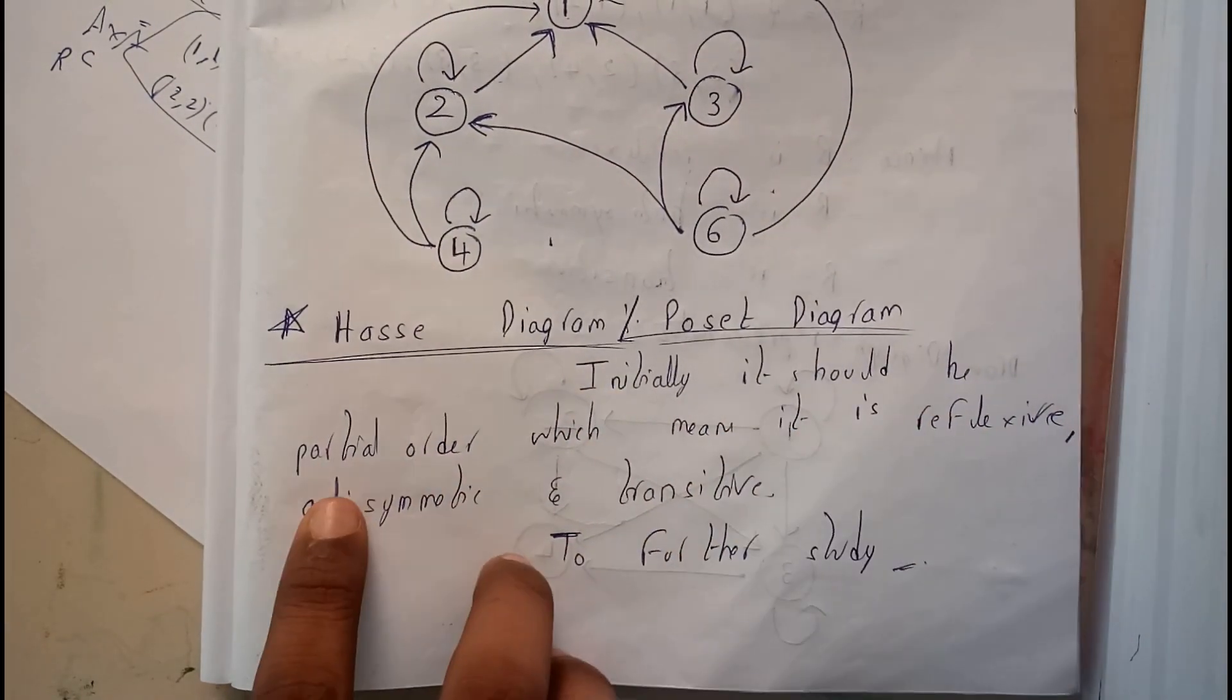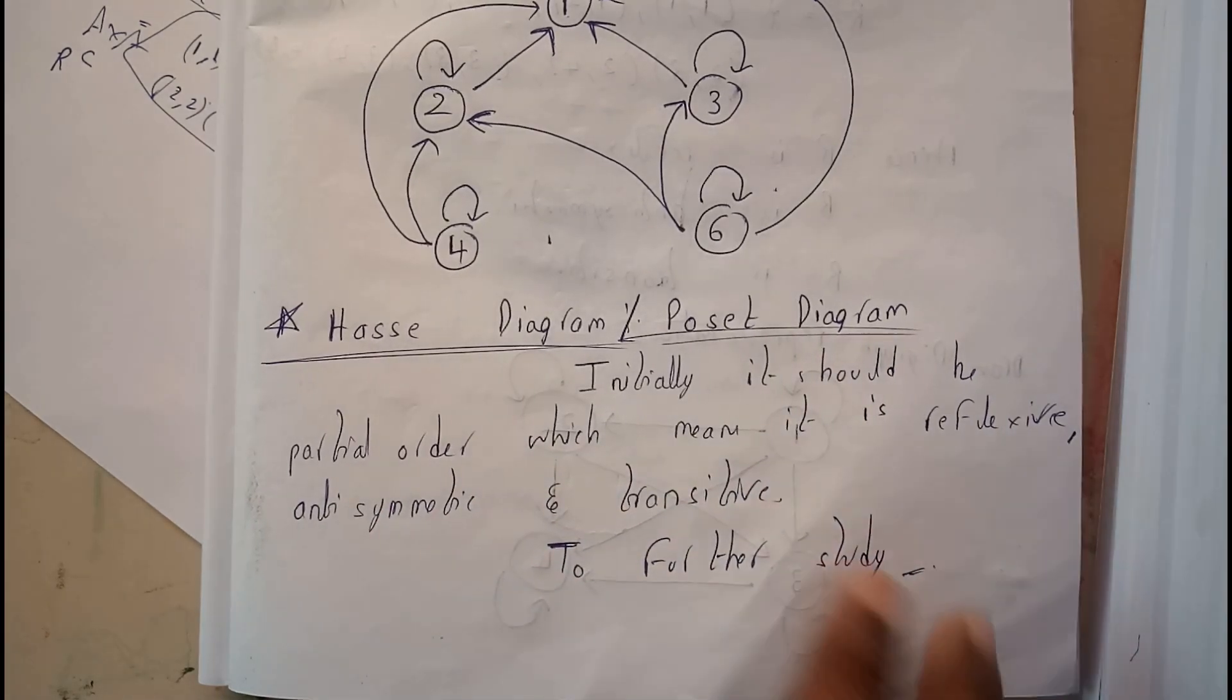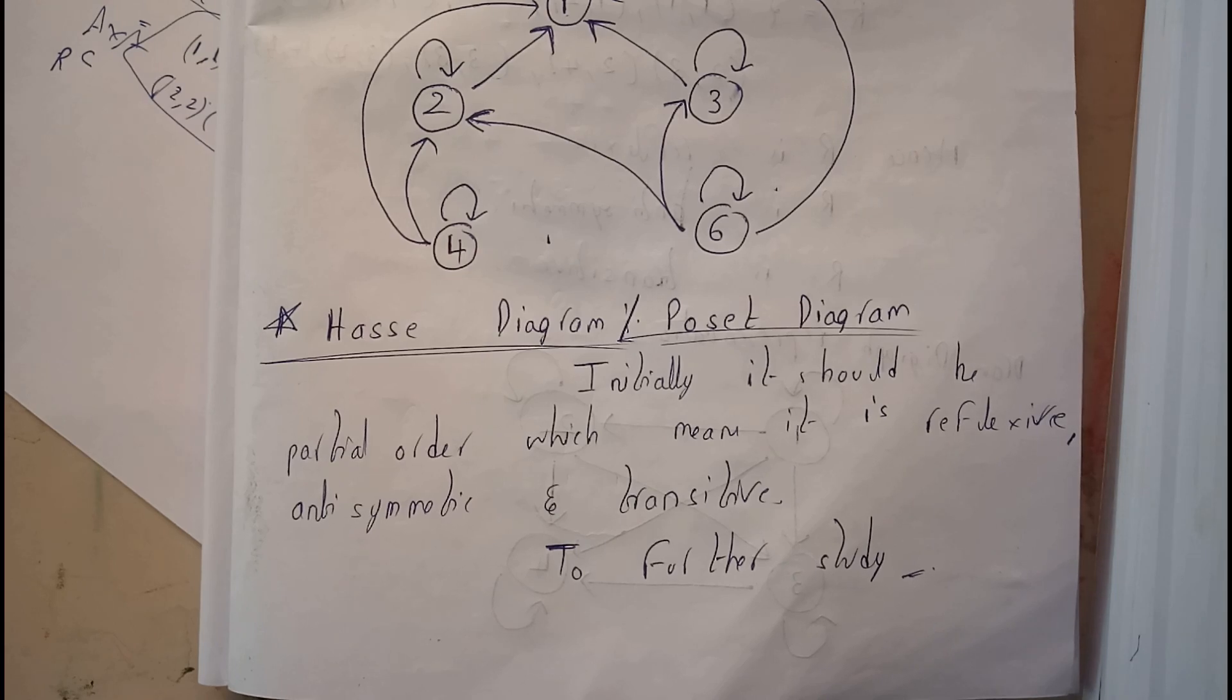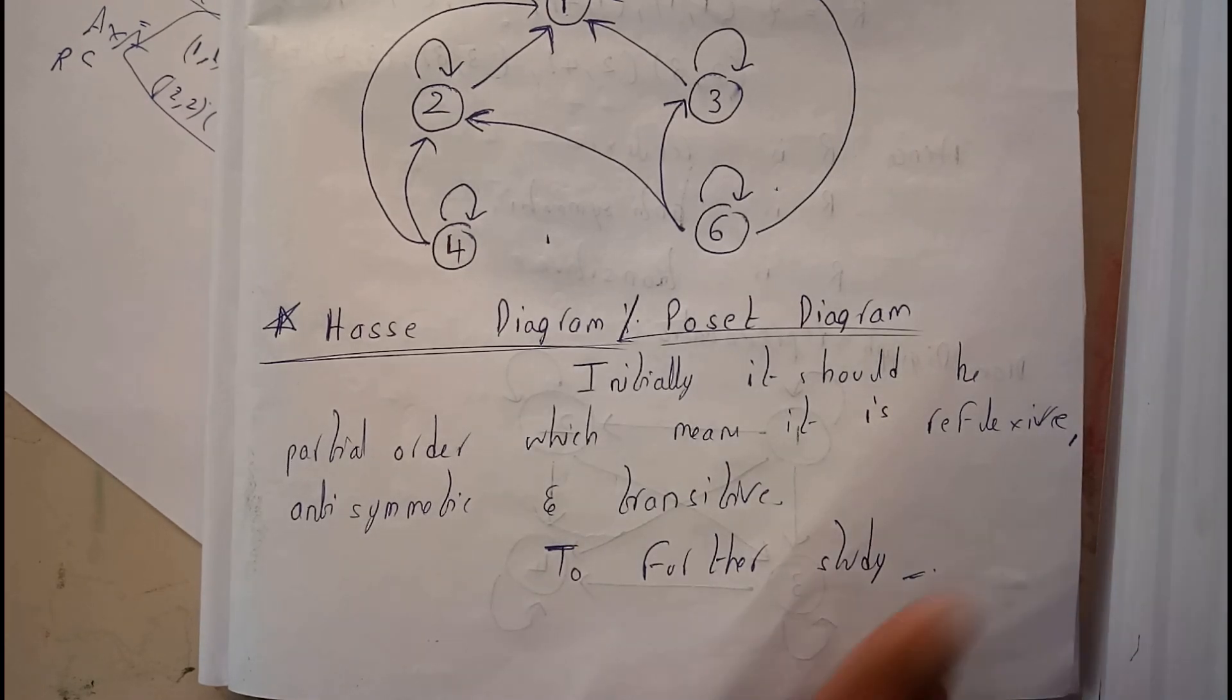Initially, it should be a partial order. What is a partial order? Which is reflexive, anti-symmetric, and transitive. I hope you got some idea.